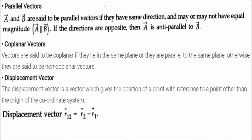Parallel vectors have the same direction, though they may not have equal magnitude. If the direction is opposite, they are called anti-parallel vectors. Coplanar vectors are those that lie on the same plane — if two vectors are both parallel to a given plane, then they are coplanar. If they do not lie on the same plane, they are called non-coplanar vectors.